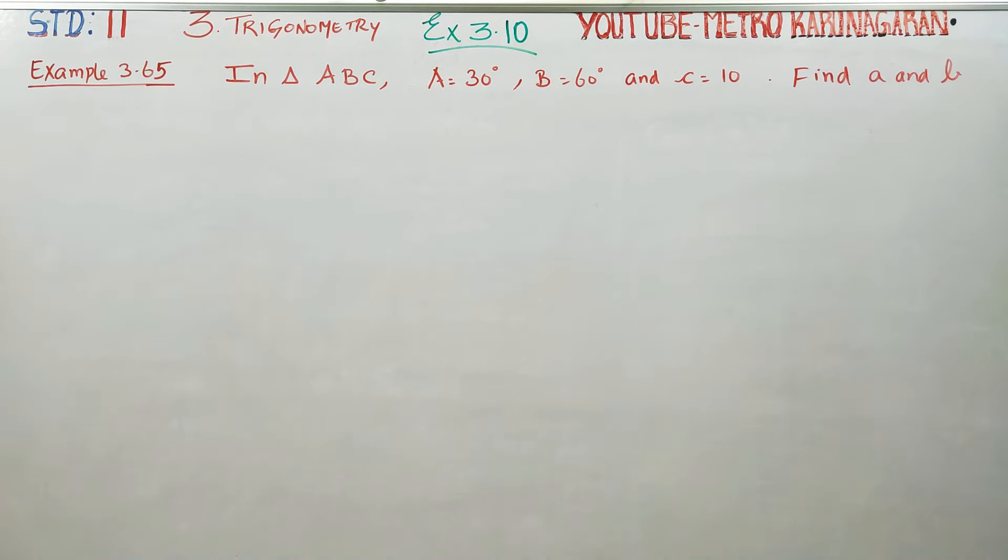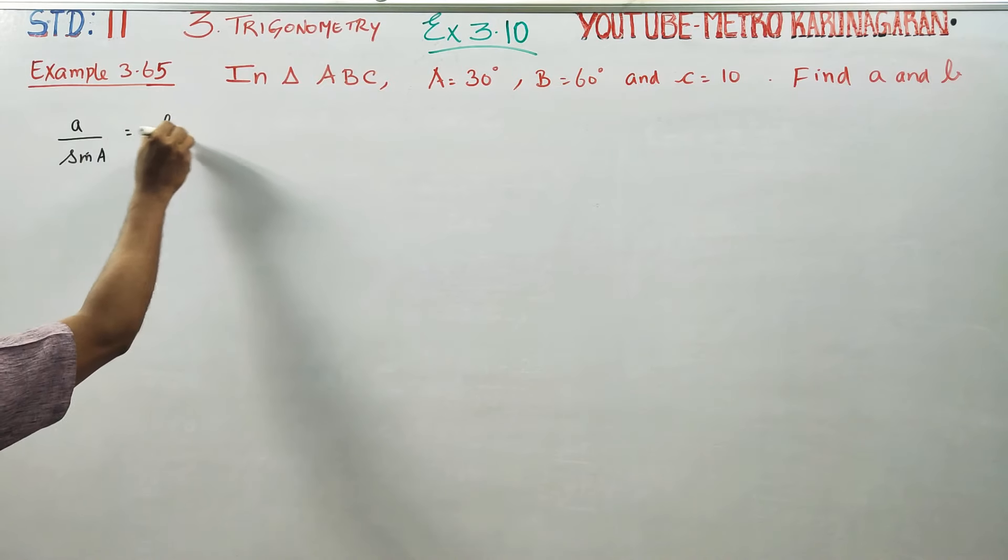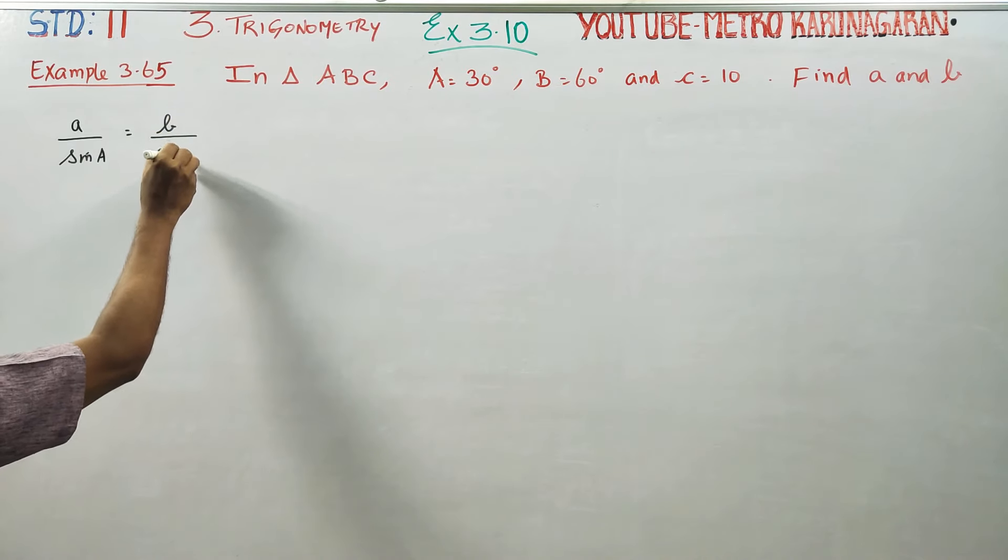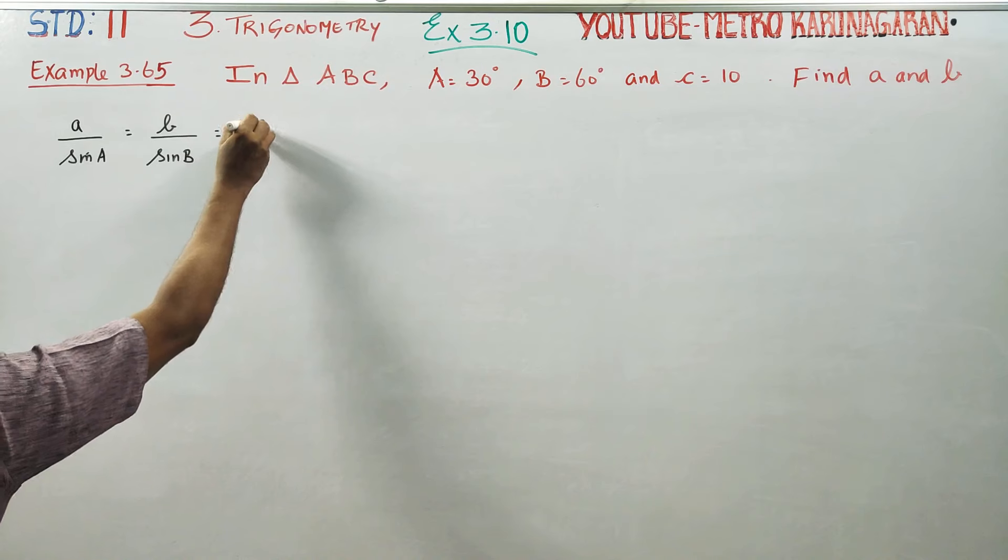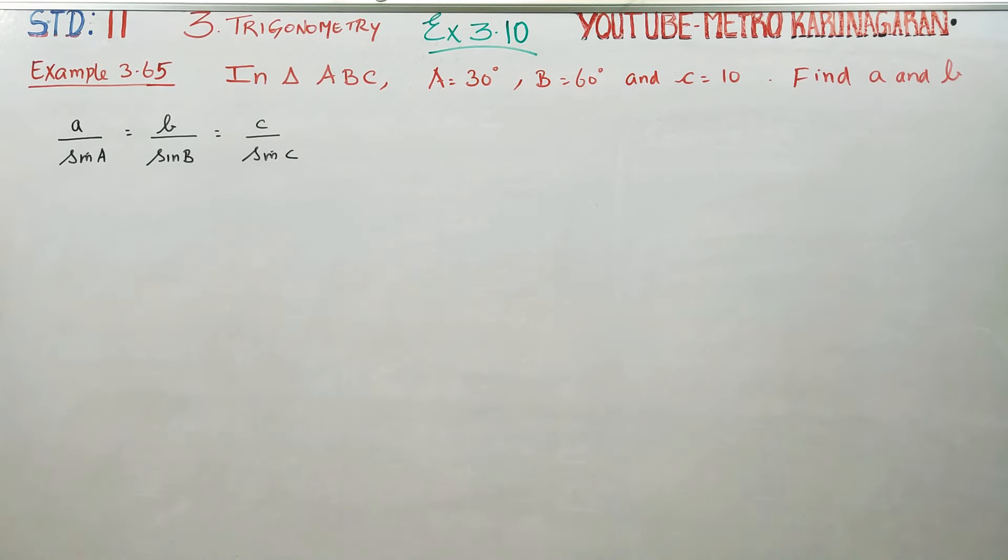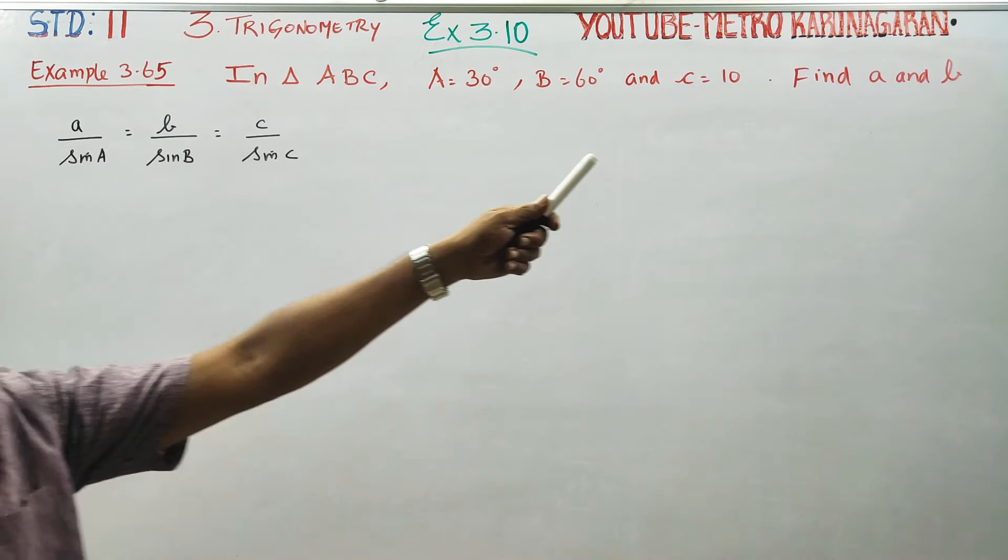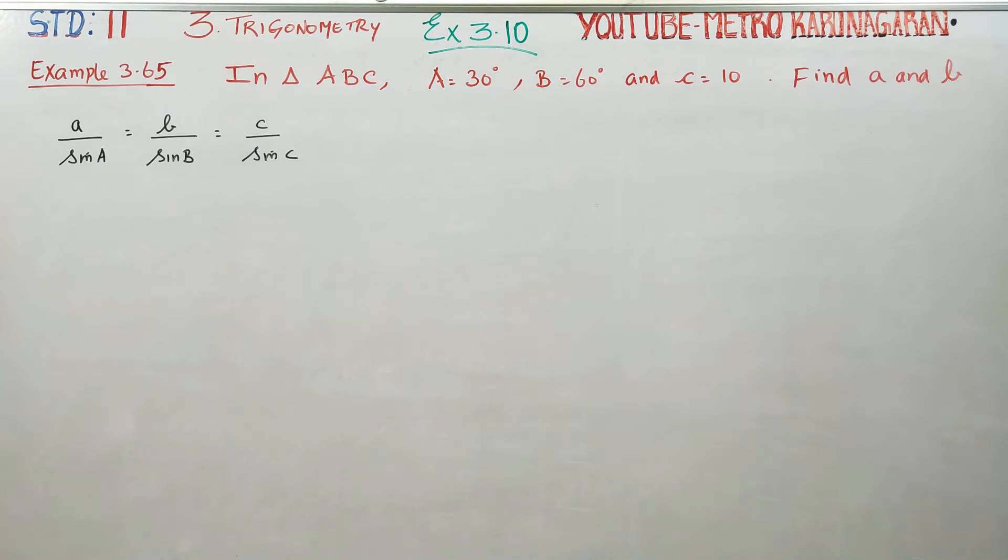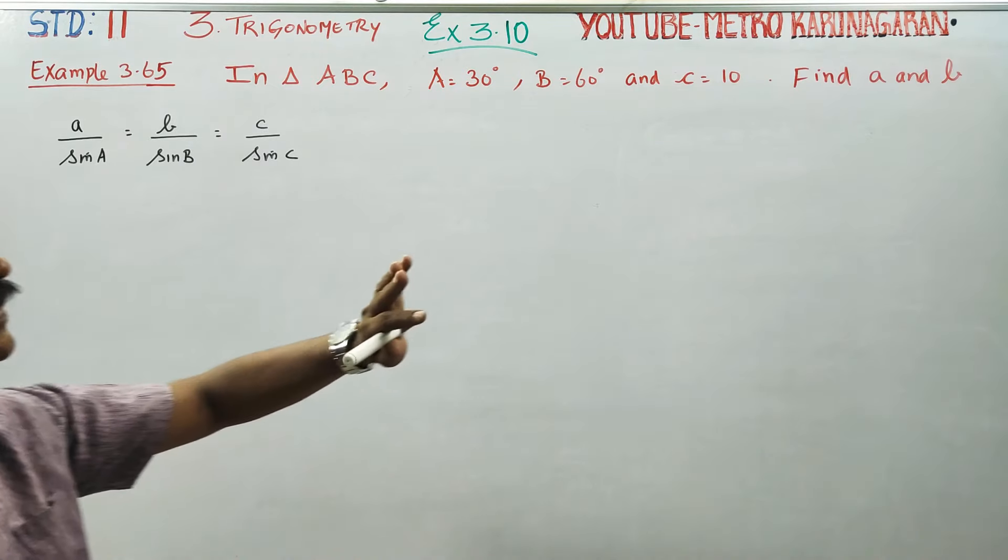First, the sine formula. What is the sine formula? a/sin A = b/sin B = c/sin C. We'll use this formula: a/sin A = c/sin C.